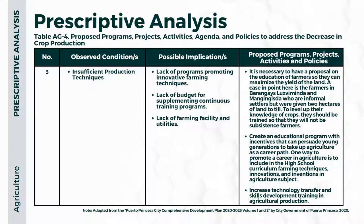For the third observed condition — insufficient production techniques — it is necessary to have a proposal on education of farmers so they can maximize the yield of the land. Farmers in barangay Luz Triminda and Mangingisda, who are informal settlers but were given hectares of land to till, should be trained so they will not be subsistence farmers. An educational program with incentives should persuade young generations to take up agriculture as a career path, including incorporating farming techniques, innovation, and inventions in agricultural subjects in high school. Technology transfer and skills development training in agricultural production should be increased.